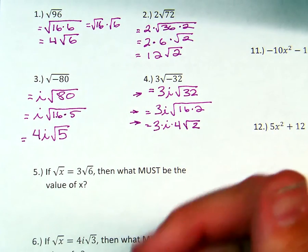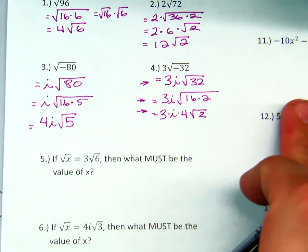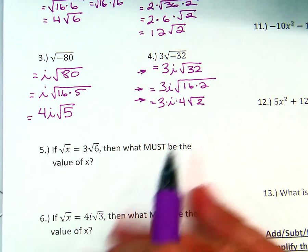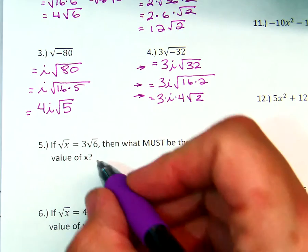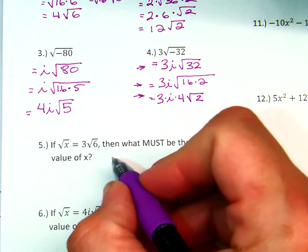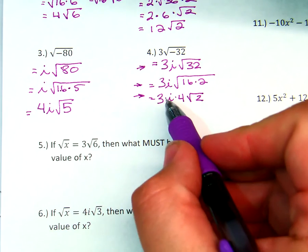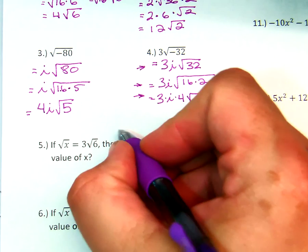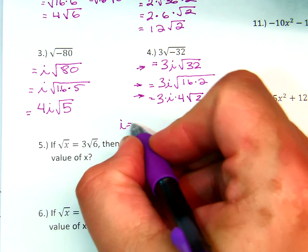So even though the number is negative, you turn it into a positive by taking out i. Because remember, i is equal to the square root of negative 1.